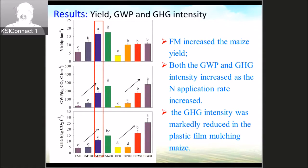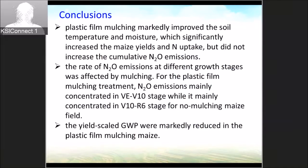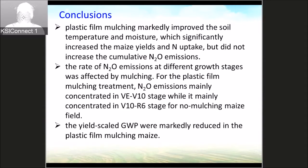In conclusion, first, plastic film mulching can improve soil temperature and moisture, which significantly increases maize yield and nitrogen uptake, but it does not increase cumulative N2O emissions. Second, the rate of N2O emission at different growth stages was affected by the mulching. For the plastic film mulching treatment, N2O emissions were mainly concentrated before the tasseling stage, while for the non-mulching practice they were concentrated in the later stage. Thank you.